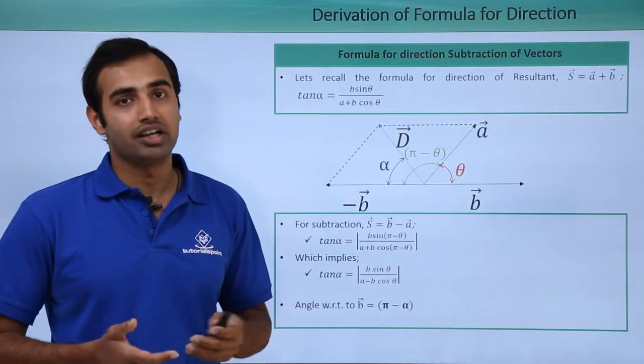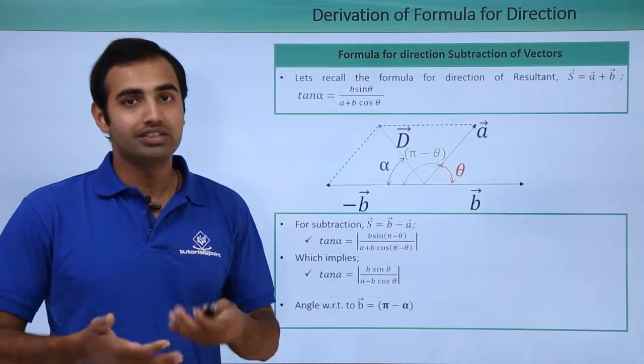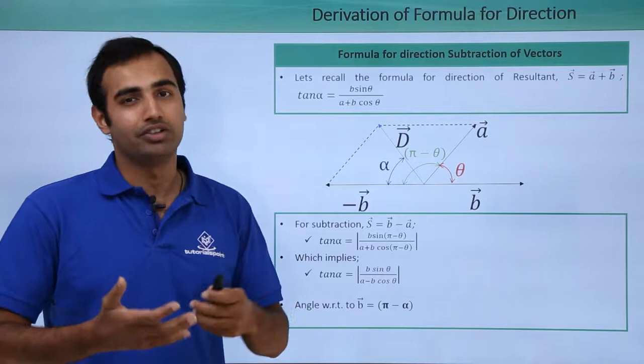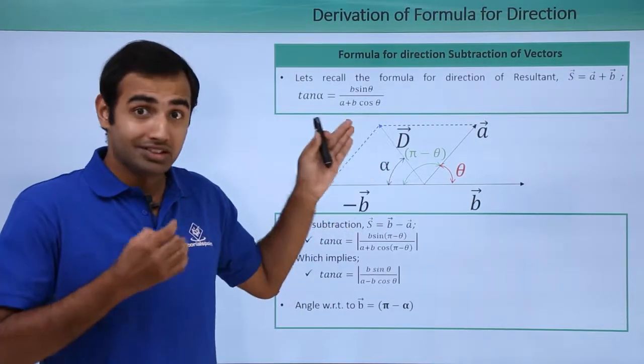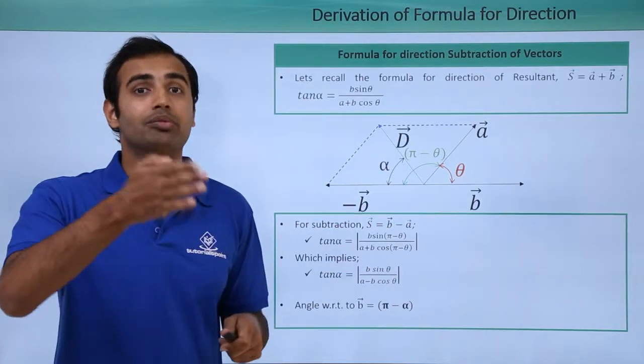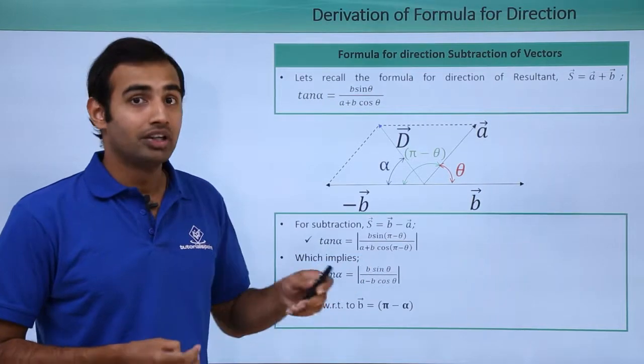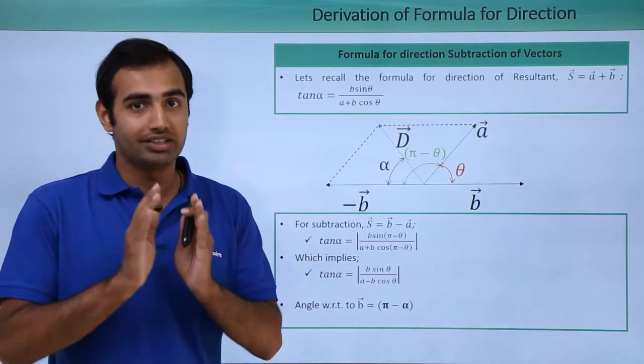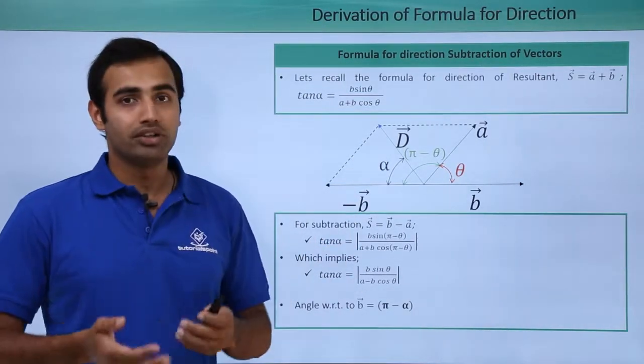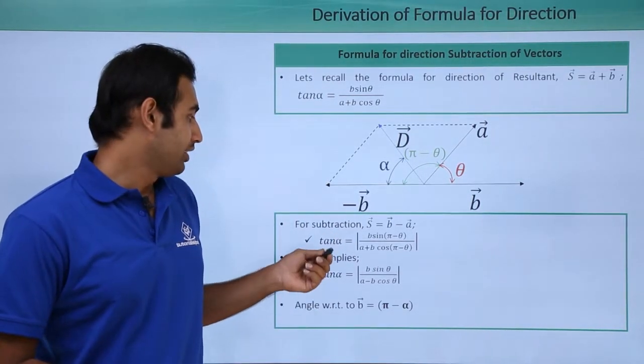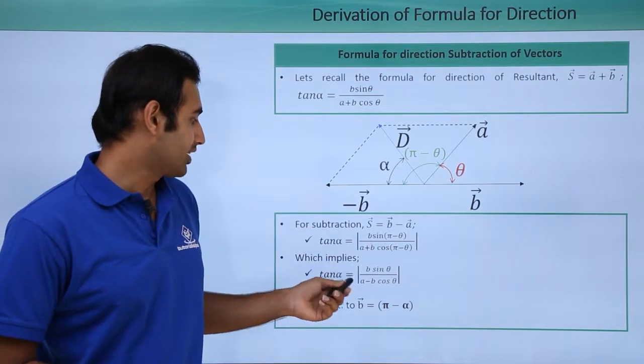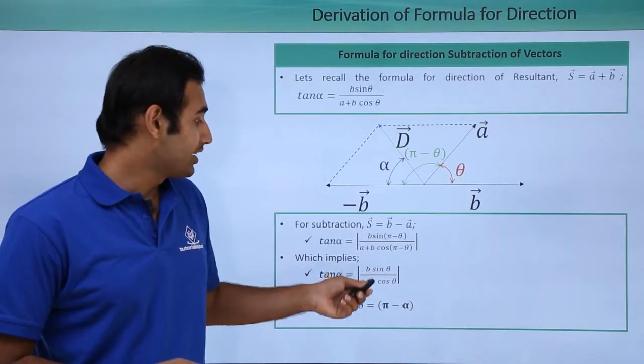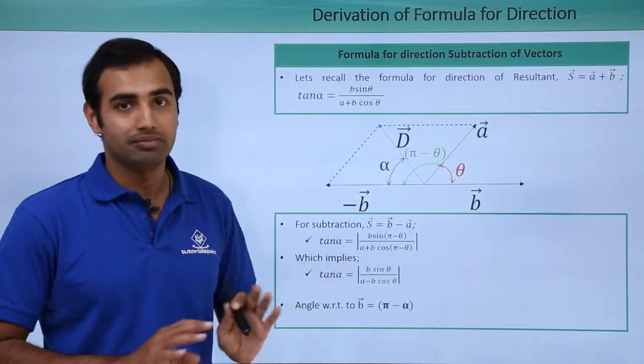Now notice the modulus symbol that I have placed across my term. What is the reason behind it? The reason is all I'm interested in is the magnitude or the value of this angle α. The value of α that I obtained from this equation may not be correct by the sign convention. So in case if I obtain a negative value, my interpretation of α may be that it's a negative angle, but that will not be the case over here. α is not necessarily a negative angle. That's why using a modulus symbol prevents me from making that error. So I can write tan α = (b sin θ)/(a - b cos θ) because sine of (π - θ) is nothing but sin θ and cos of (π - θ) is nothing but minus cos θ.